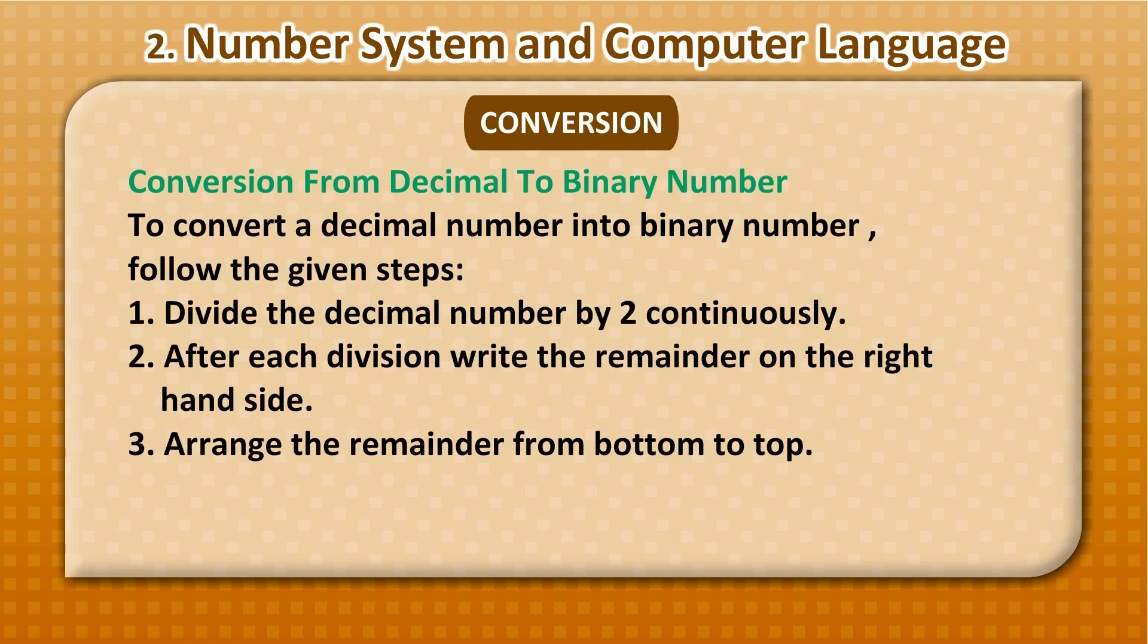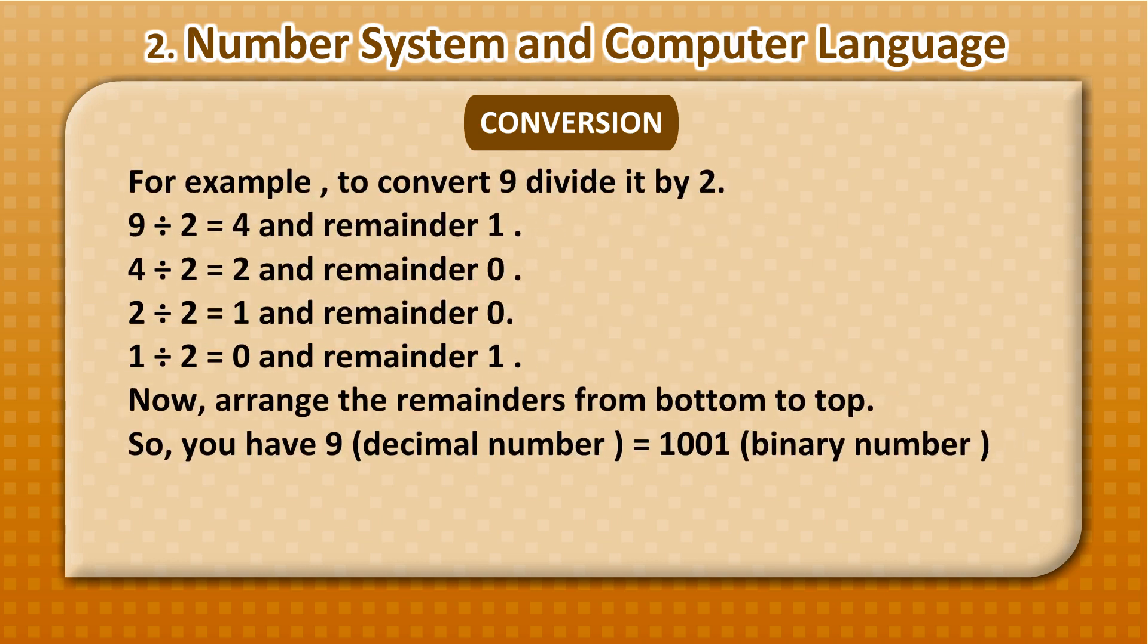Conversion from decimal to binary number: To convert a decimal number into binary number, follow the given steps. 1. Divide the decimal number by 2 continuously. 2. After each division, write the remainder on the right-hand side. 3. Arrange the remainder from bottom to top. For example, to convert 9, divide 9 by 2, which equals 4 with remainder 1.